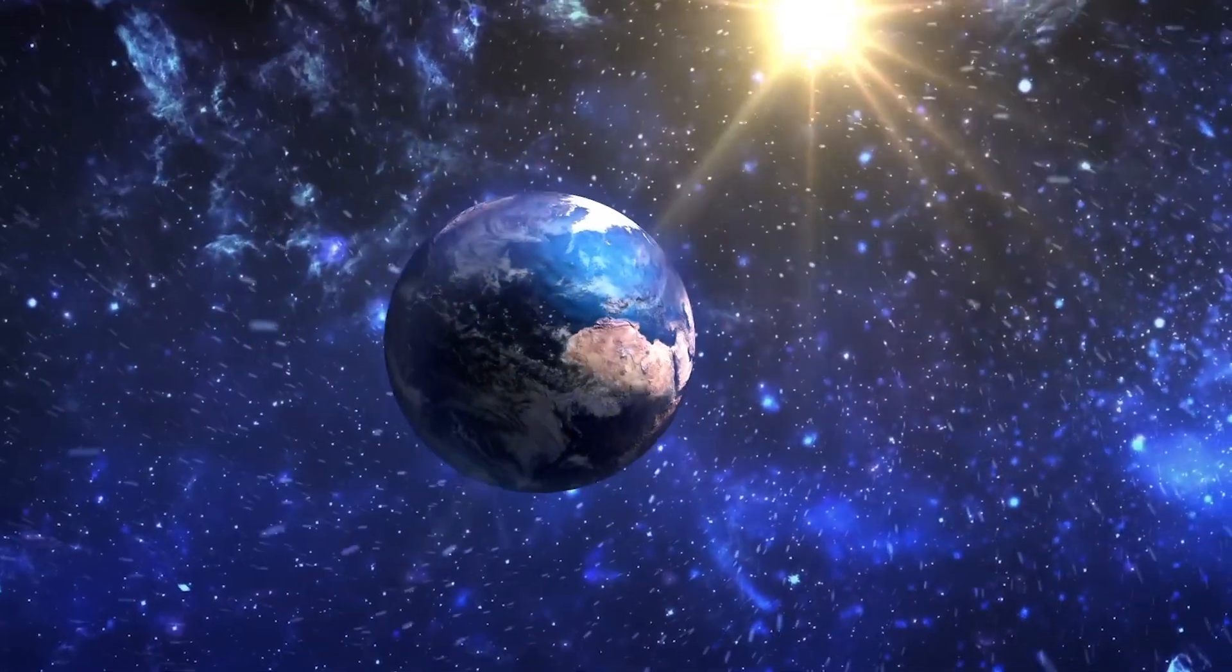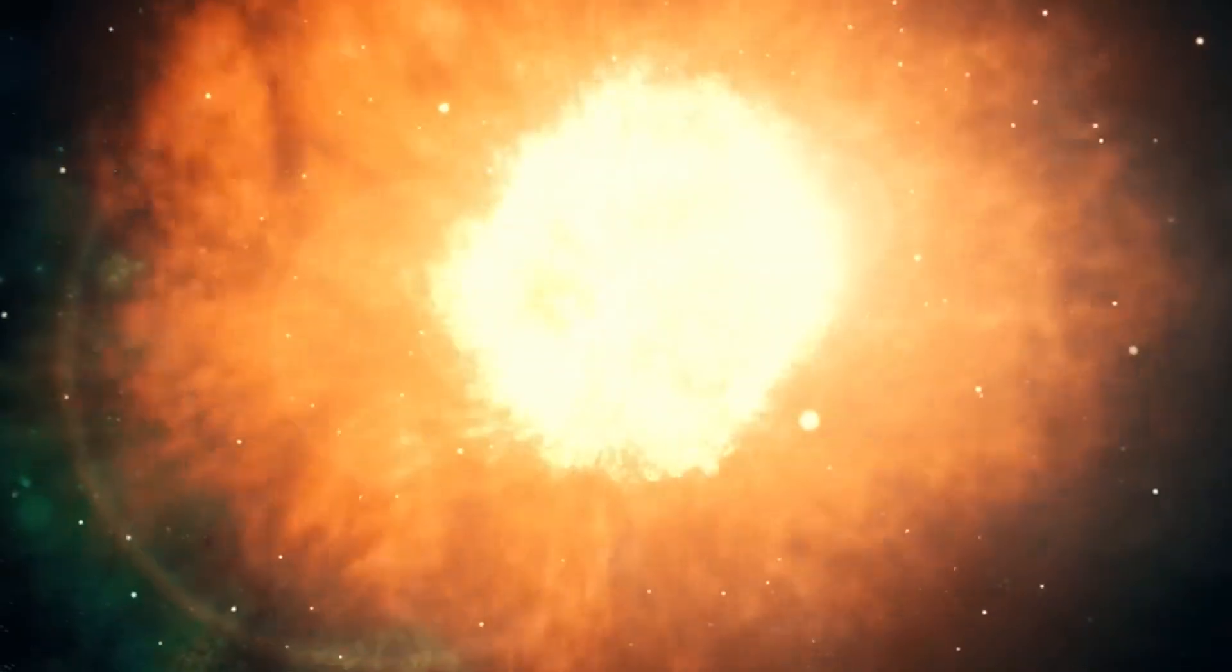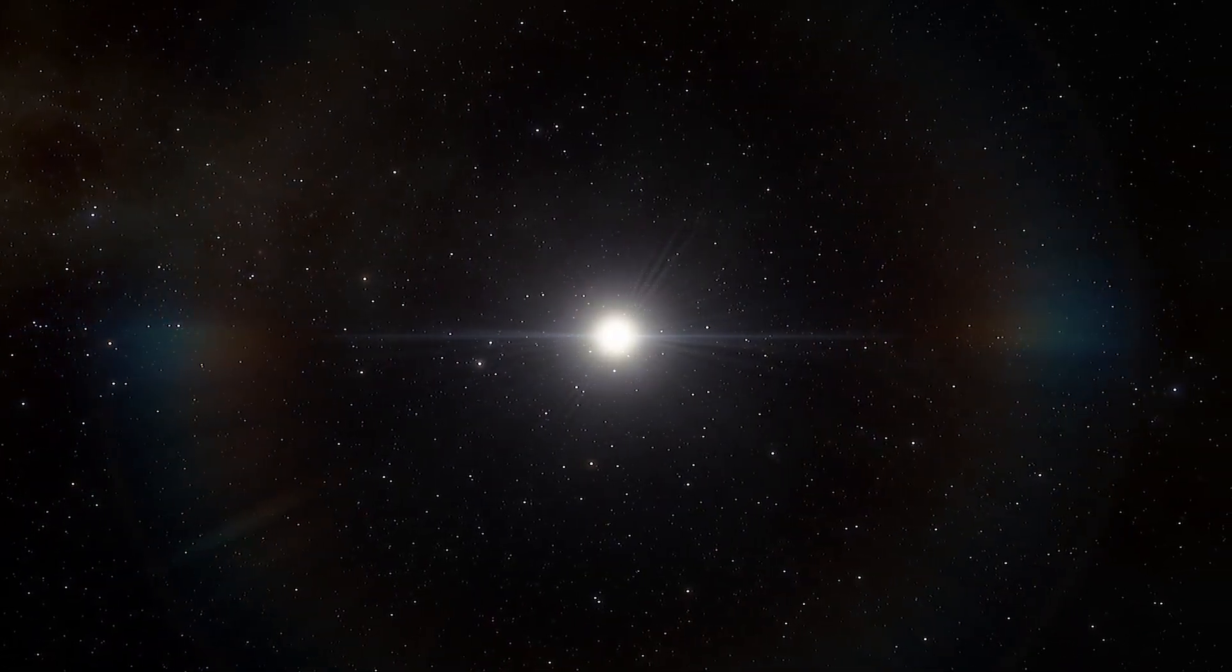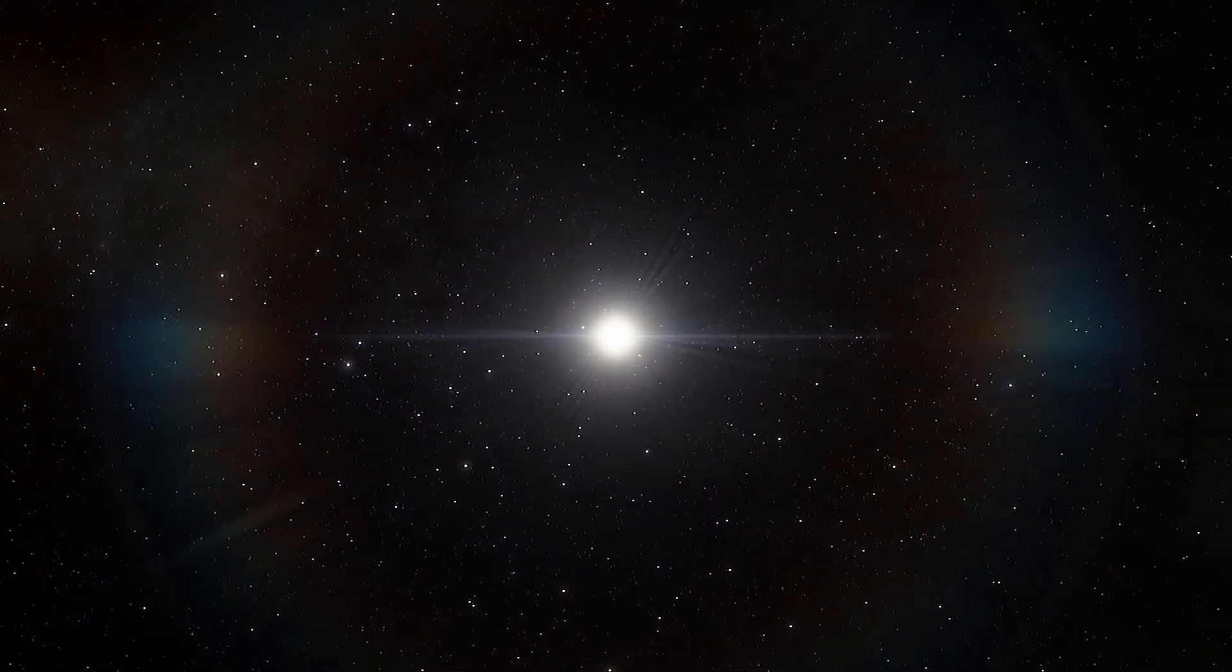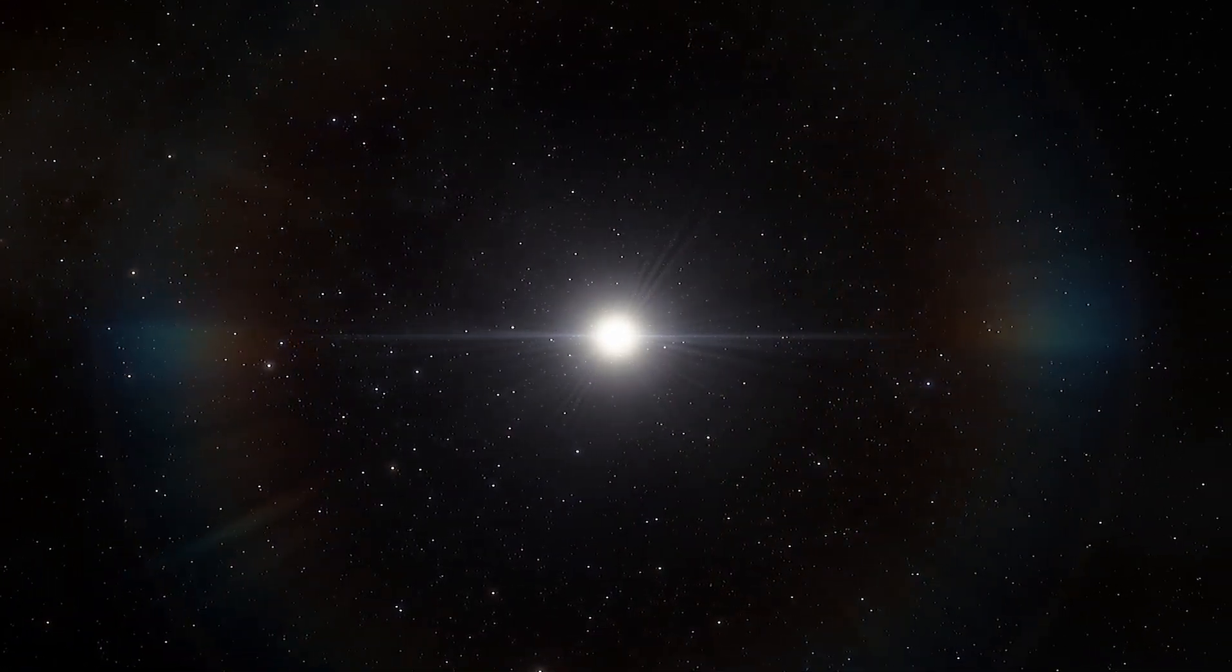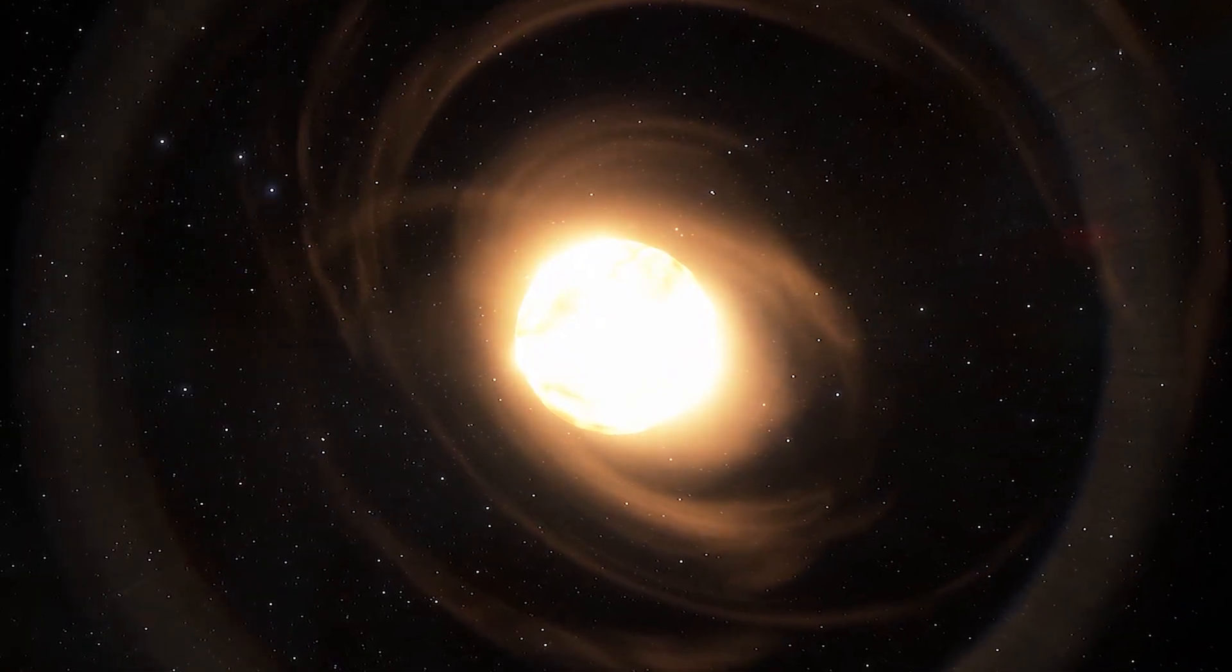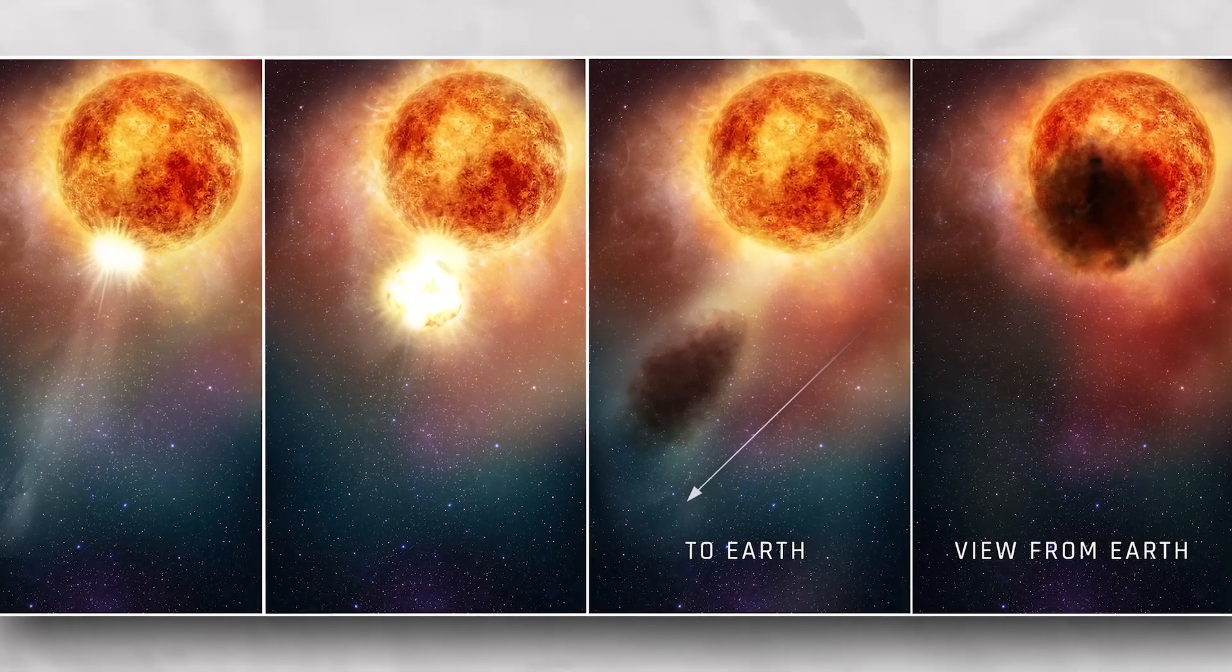So, what exactly is happening with Betelgeuse and why is it causing such a buzz in the scientific community? In late 2019 and early 2020, Betelgeuse, one of the brightest stars in the night sky, suddenly became much dimmer. This event was so noticeable that even people who aren't astronomers could see the difference. Scientists called this unusual phenomenon the great dimming event.